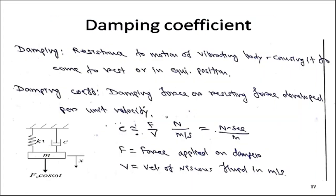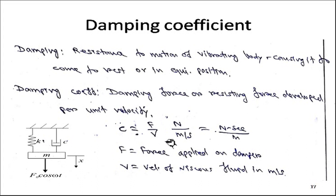Damping is the resistance to motion of a vibrating body that causes it to come to rest at its equilibrium position. The damping coefficient c is defined as the damping (resisting) force per unit velocity: c = Force / Velocity, with units of N·s/m. Here F is the force applied on the damper and v is the velocity of the viscous fluid in m/s.